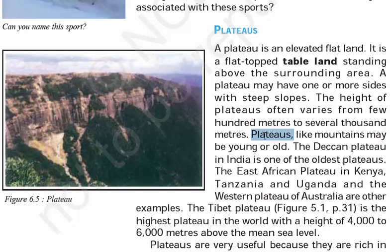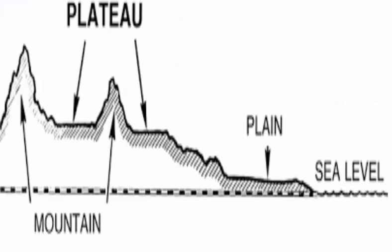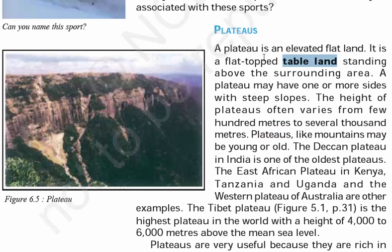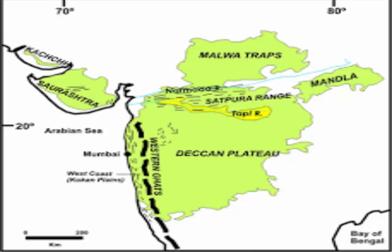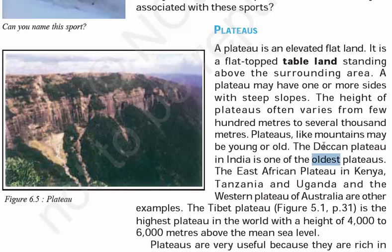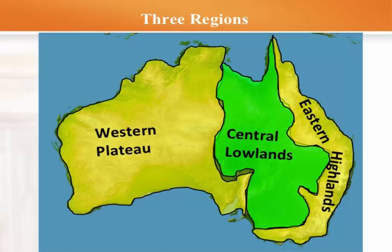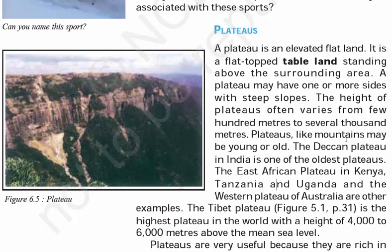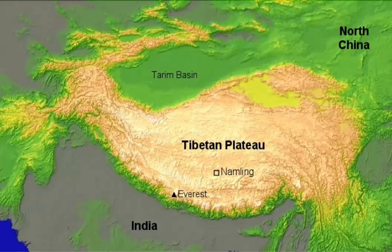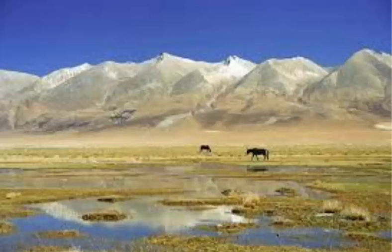In page 4, we'll read about plateaus. A point to remember: a plateau is an elevated flat land — a flat-topped table land. Plateaus, like mountains, may be young and old. The Deccan Plateau in India is one of the oldest plateaus. The East African Plateau in Kenya, Tanzania, and Uganda, and the Western Plateau of Australia are other examples of old plateaus. The Tibet Plateau is the highest plateau in the world, with a height of 4,000 to 6,000 meters.